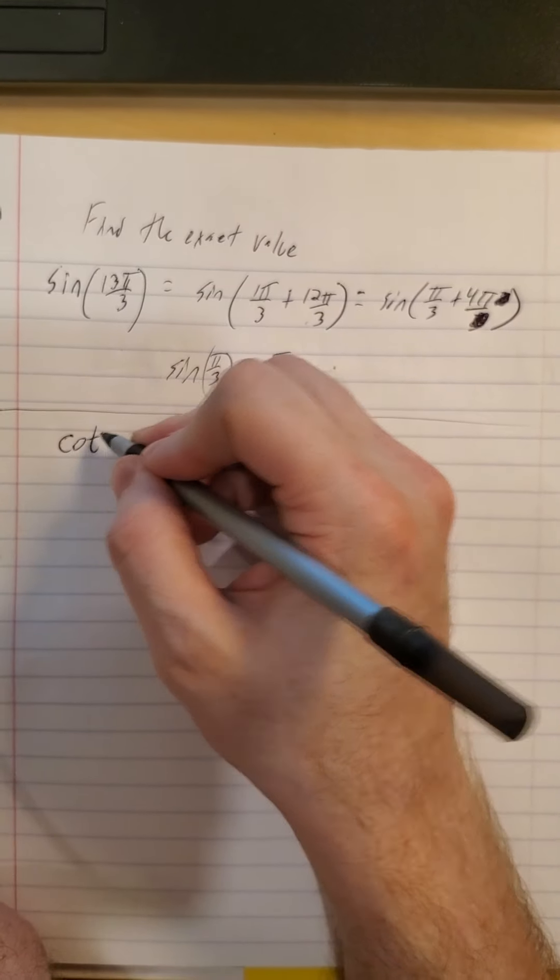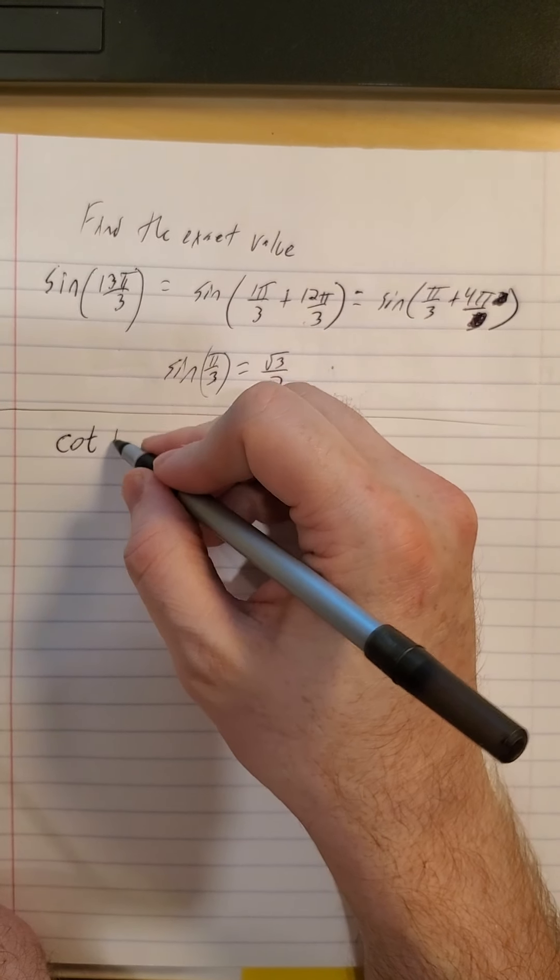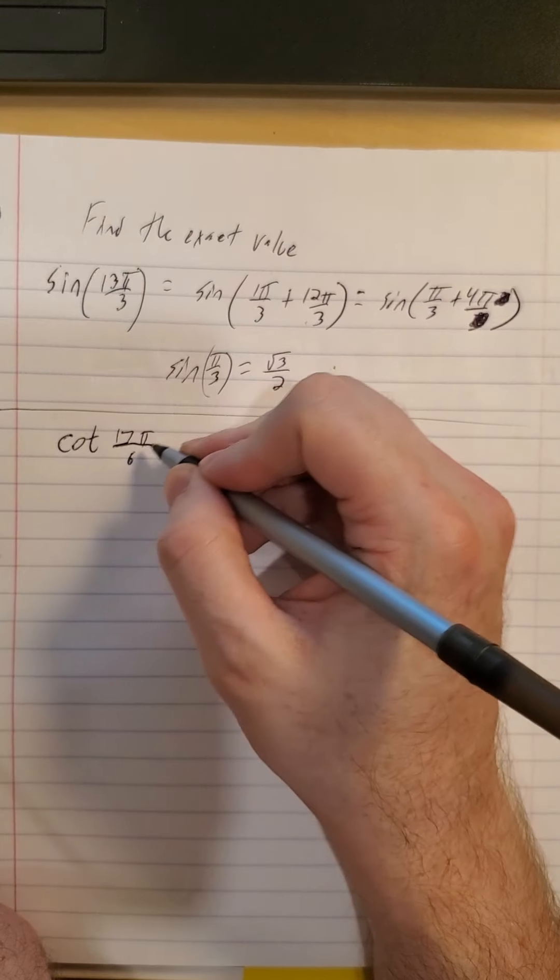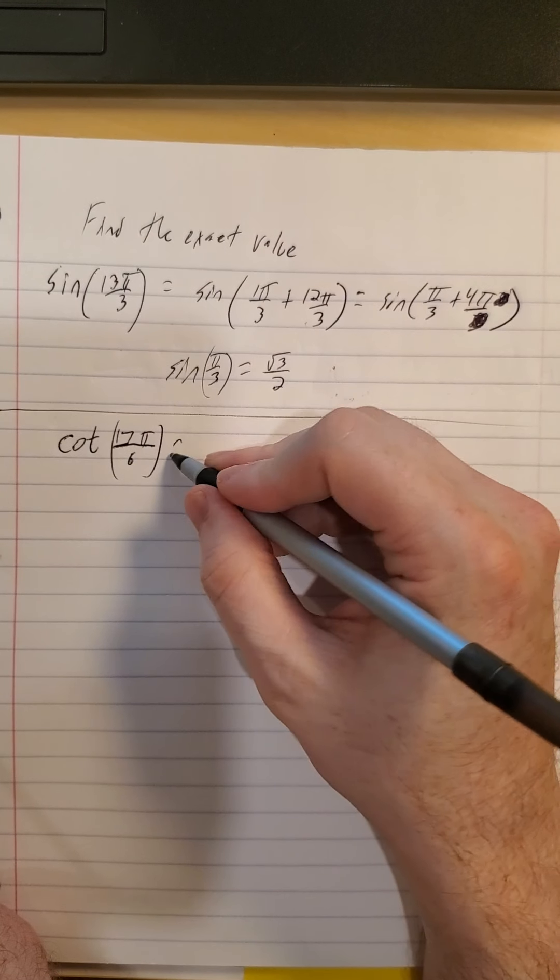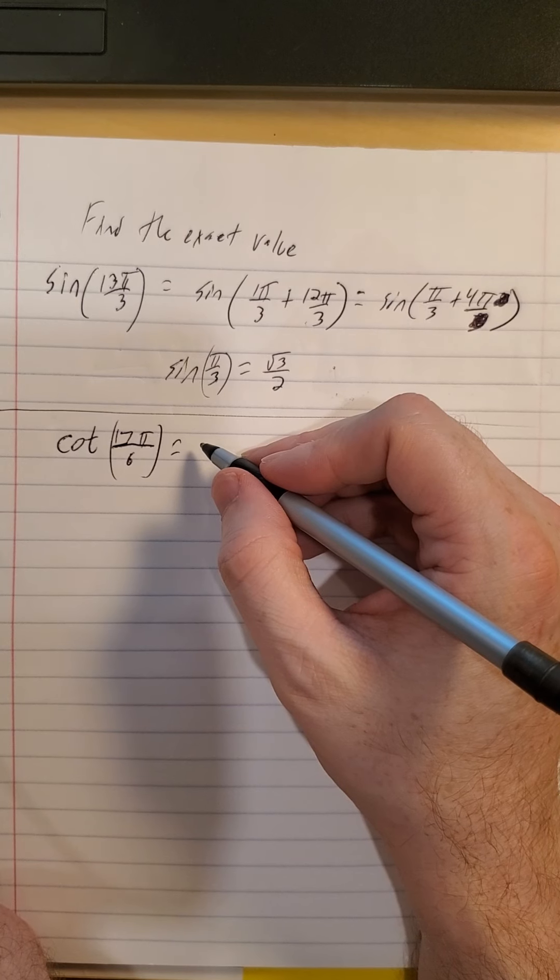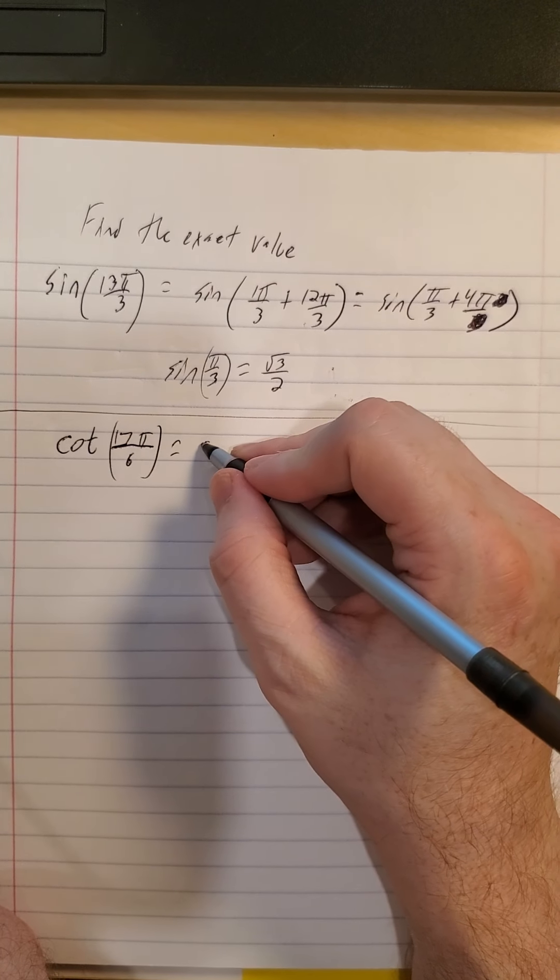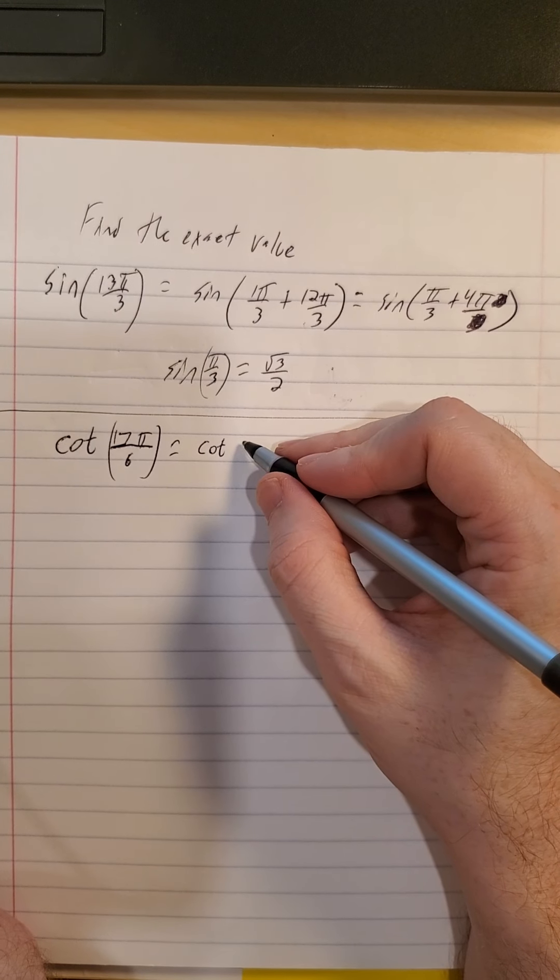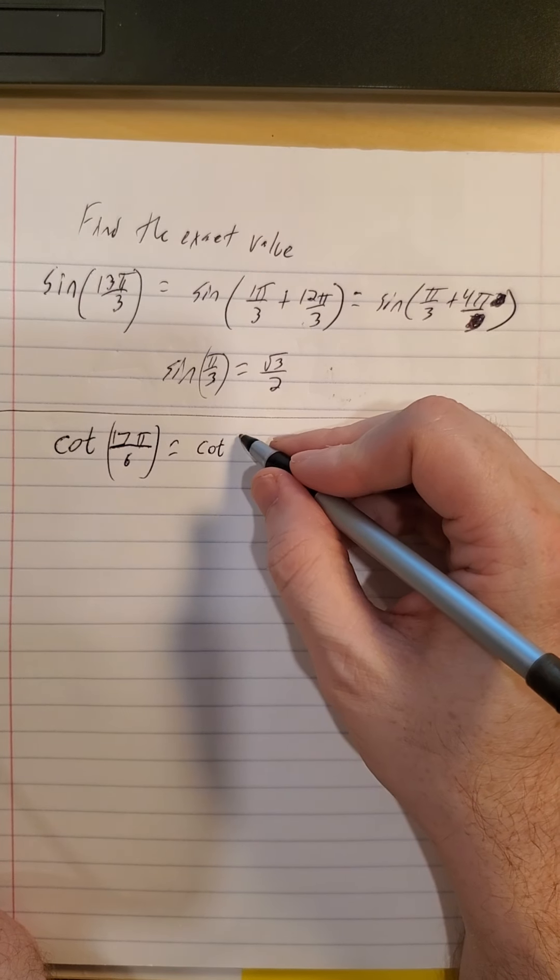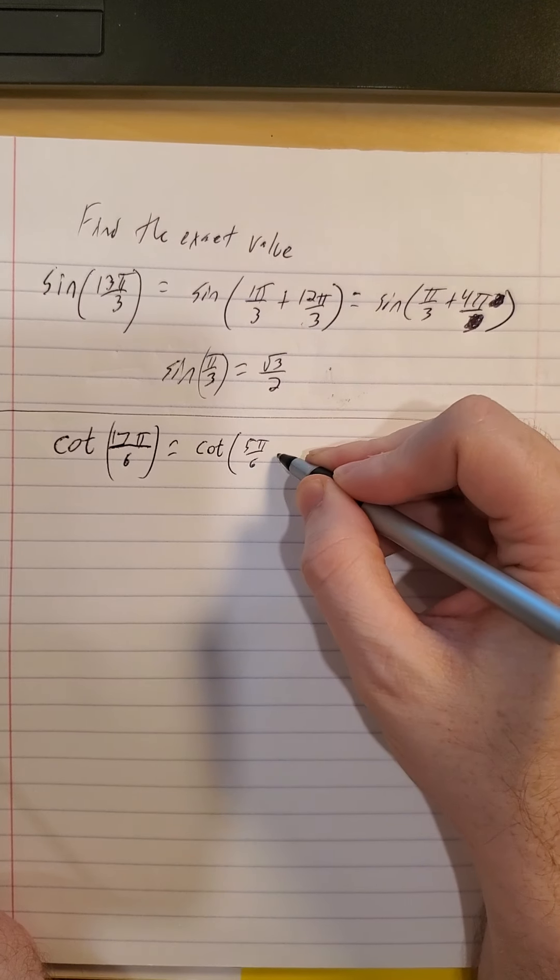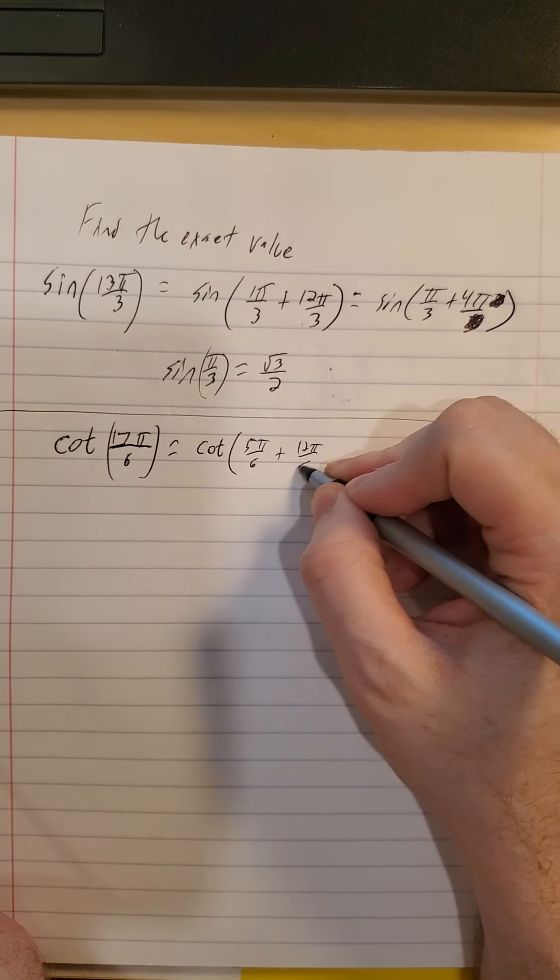Alright, so next we'll play with a cotangent. Cotangent of 17π over 6. Well, 12π over 6 is a nice, neat, pretty integer.